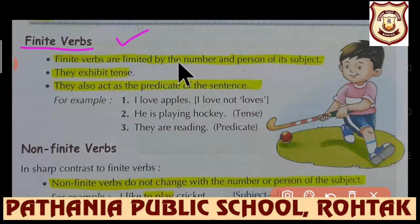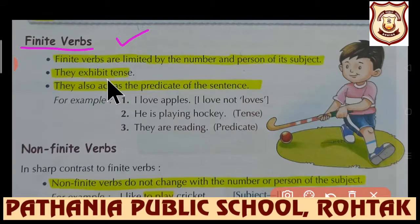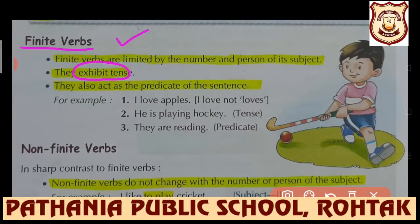Finite verbs are limited by the number and person of their subject. They exhibit tense - if first form plus '-s' or '-es' is used, it is present indefinite; if second form is used, it is past indefinite; if 'will go' is used, it is future indefinite. So they exhibit tense. They also act as the predicate of the sentence.